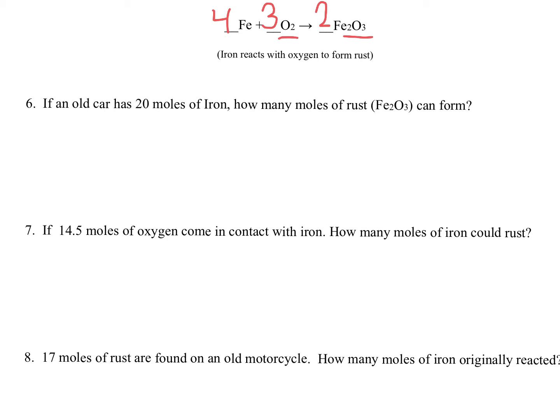Now that I am balanced, I'm ready to use that balanced equation to my advantage in order to do some conversions. So if an old car has 20 moles of iron on it, how many moles of rust could form? So moles of iron, that's like my A, and then moles of a new substance is like my B substance. So I'm going from moles of A to moles of B.